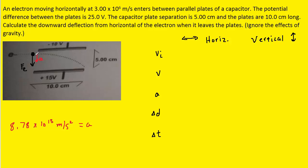When the electron enters the plate area, its initial velocity is pointing in the horizontal direction — it's moving to the right — at 3×10⁶ meters per second. We plug that in for the initial velocity in the horizontal direction. In the vertical direction, it's initially not moving at all, so the initial vertical velocity is 0 meters per second.